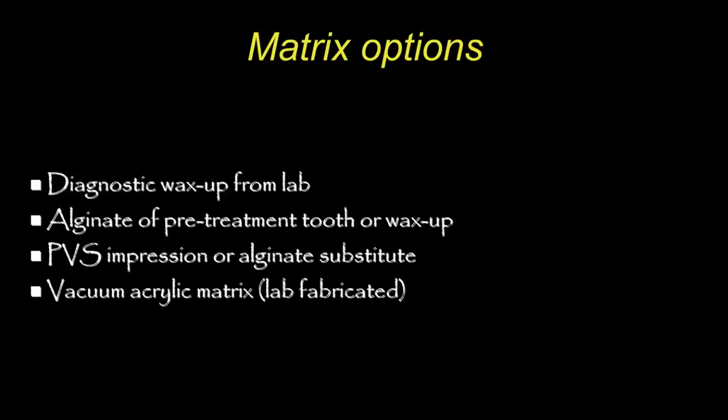For matrices, if it's a complex case, ideally get a diagnostic wax-up from the lab. The matrix can be an alginate, a pretreatment impression, a polyvinyl impression, or an alginate substitute. You can also use a vacuum-formed acrylic stent — either made in-office with a vacuum former or fabricated by a lab. You need some sort of matrix to put the material in.